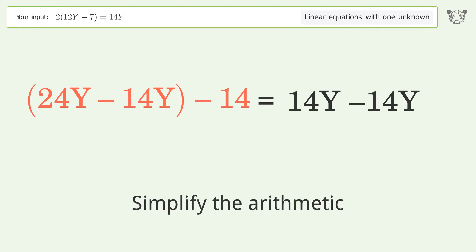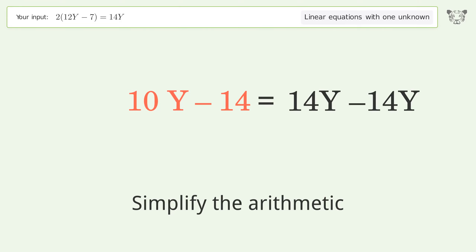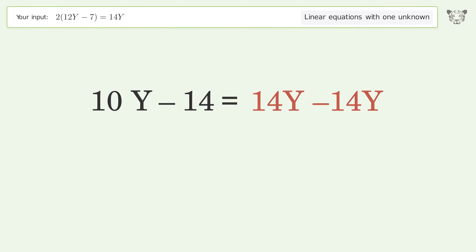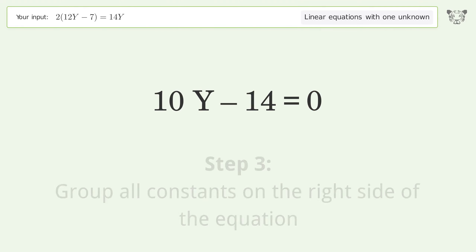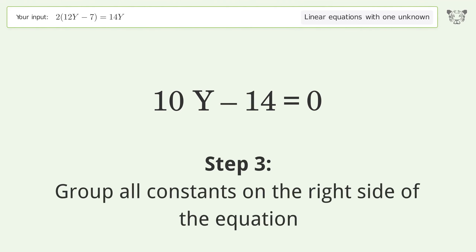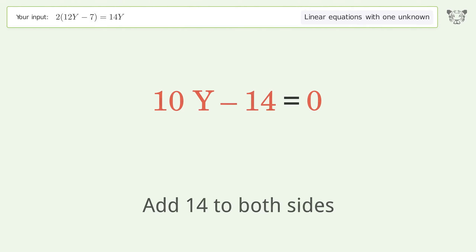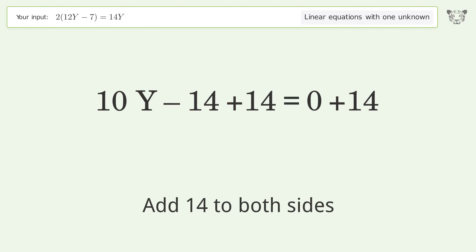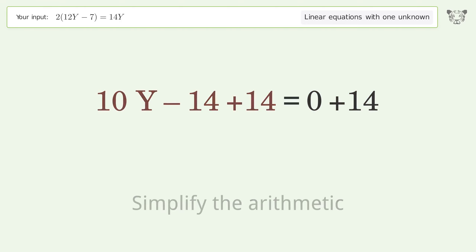Simplify the arithmetic. Group all constants on the right side of the equation by adding 14 to both sides, then simplify the arithmetic.